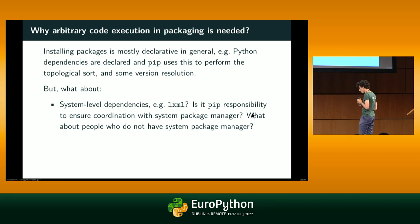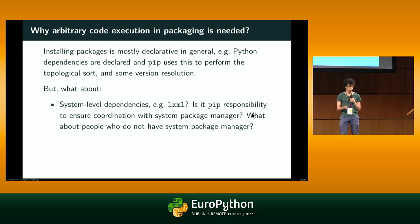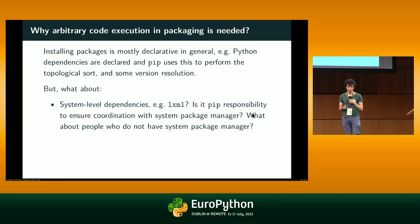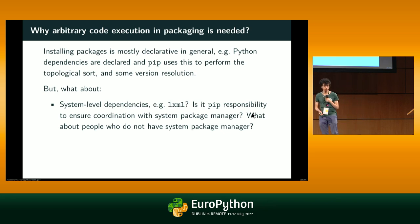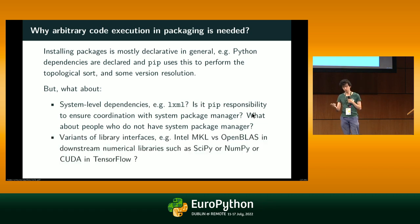The question we ask is: why is arbitrary code execution needed? Most packages we install are mostly declaring their dependencies — NumPy depends on some numerical library, and so on. PIP or any package manager uses this to perform topological sorting and version resolution. But our package description formats don't account for system-level dependencies. For example, when installing something like Beautiful Soup with an HTML parser, you might want LXML — a fast XML parser that requires C libraries — so you have to coordinate with the system package manager.